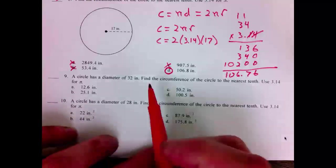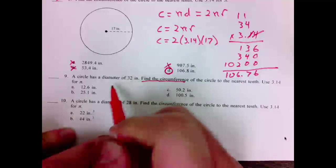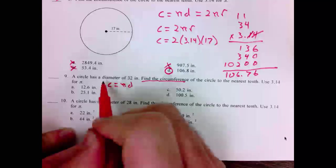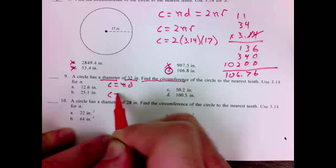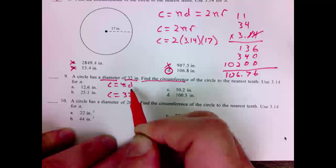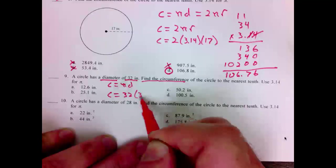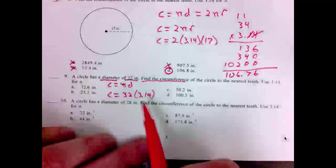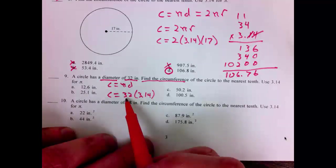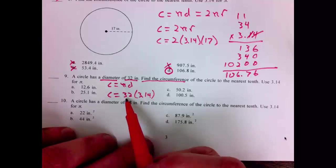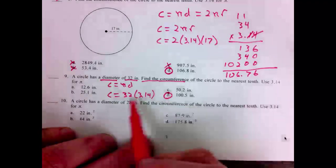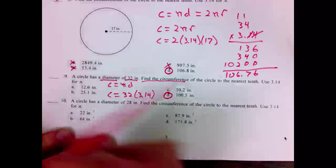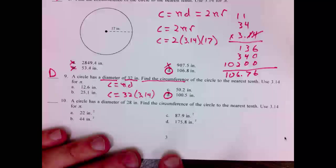Number 9. Find circumference. Again, circumference is equal to pi times diameter. They tell us the diameter is 32. Circumference equals 32, that's my diameter, times pi, 3.14. Again, I'm going to go with reasonableness. 3 times 32 is 96. It's going to have to be 100. Multiplying 32 by 3.14, you will see it will be close to 100.5. 9 is D.